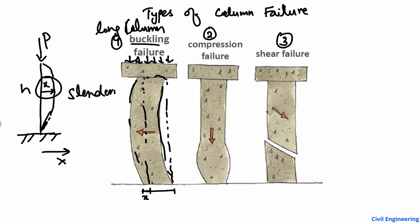To avoid buckling failure, we need to make the slenderness ratio less than 30. I have provided another lecture on slenderness ratio on my channel, so please go and watch that topic. Keeping the slenderness ratio less than 30 helps avoid buckling failure, which mostly occurs in long columns.